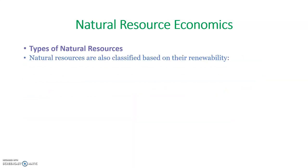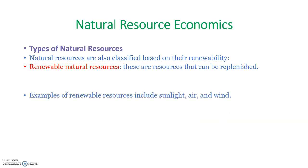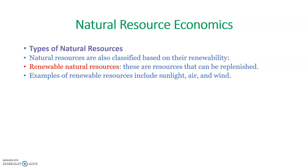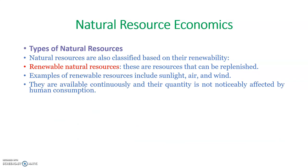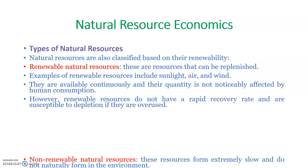Another classification of natural resources is based on their renewability. Renewable natural resources are resources that can be replenished. Examples include sunlight, air, and wind — they are available continuously and their quantity is not noticeably affected by human consumption. However, renewable resources do not have a rapid recovery rate and are susceptible to depletion if they are overused.